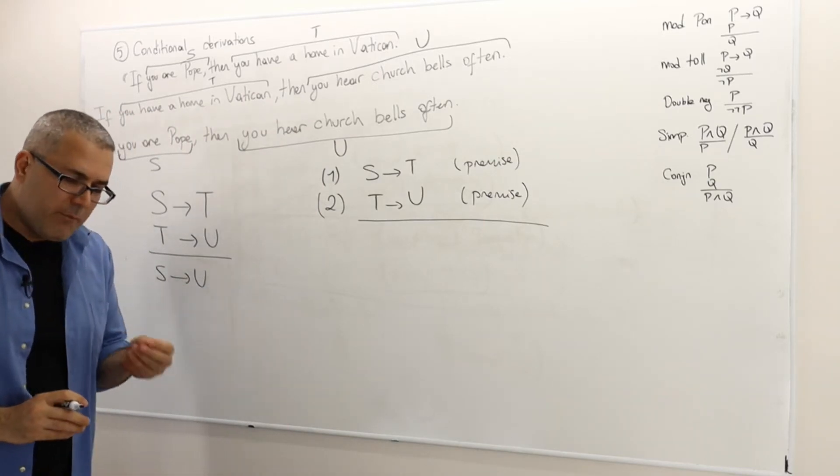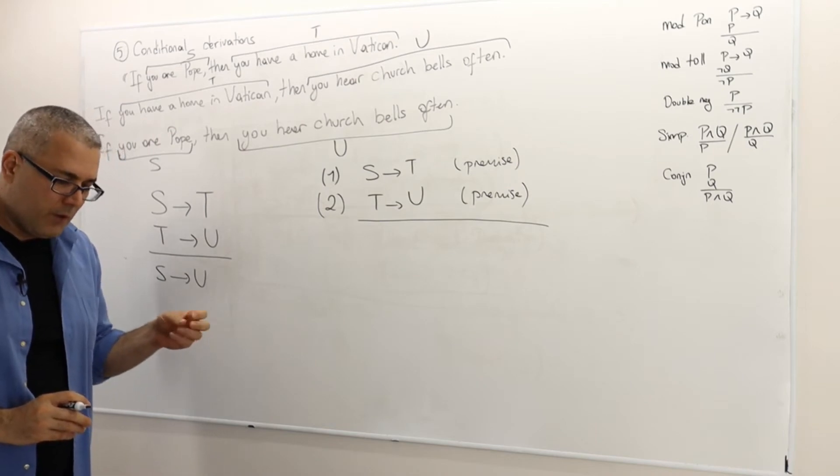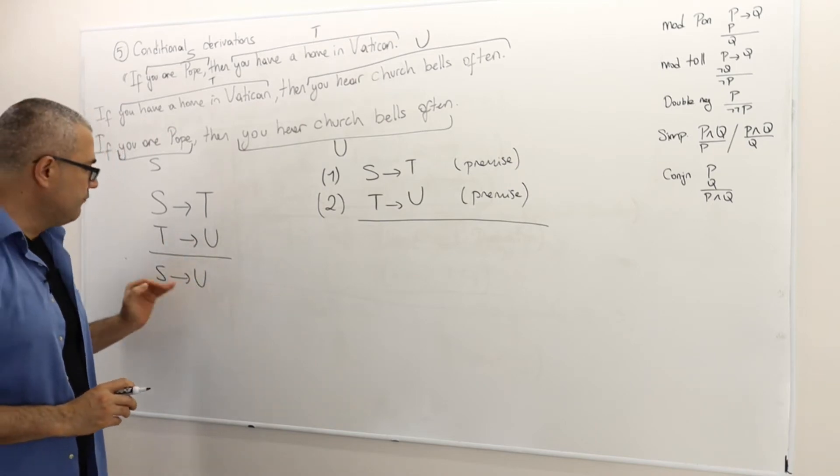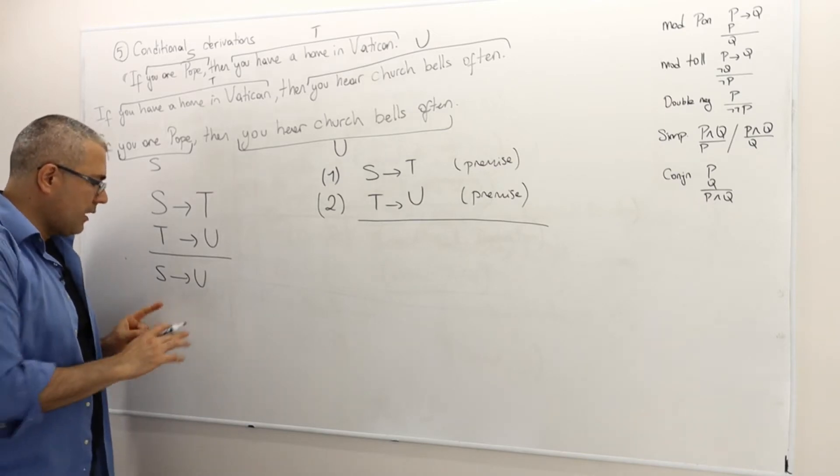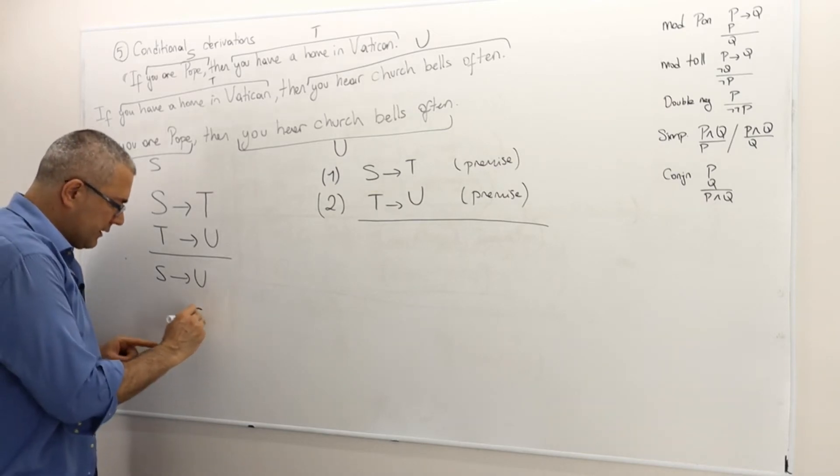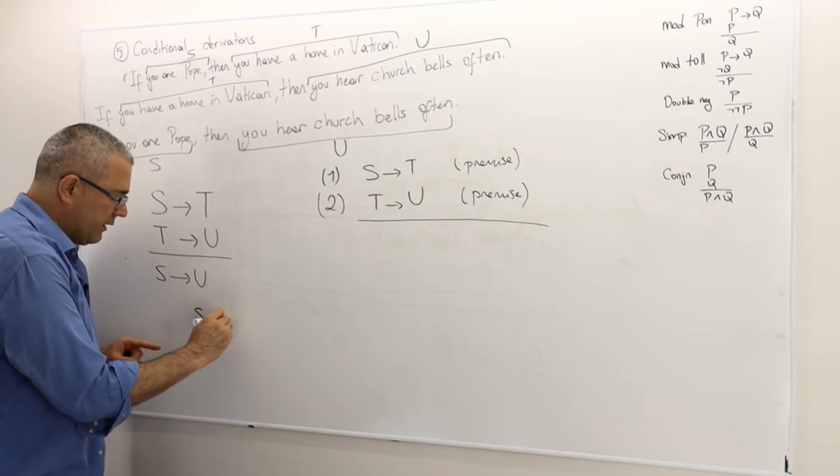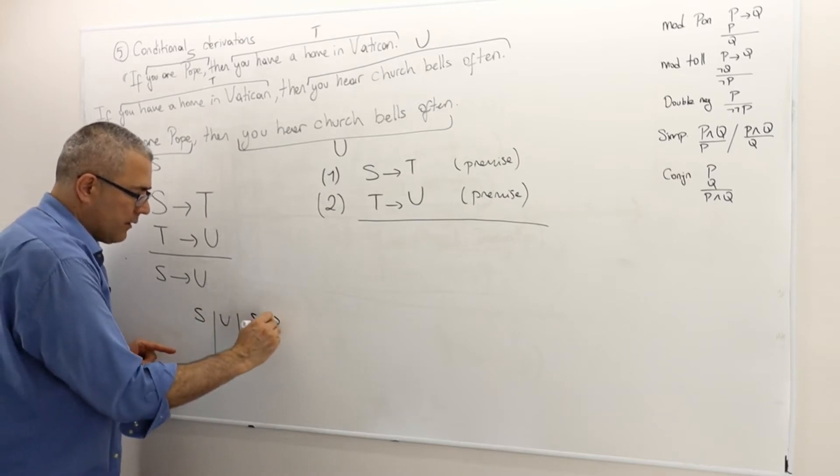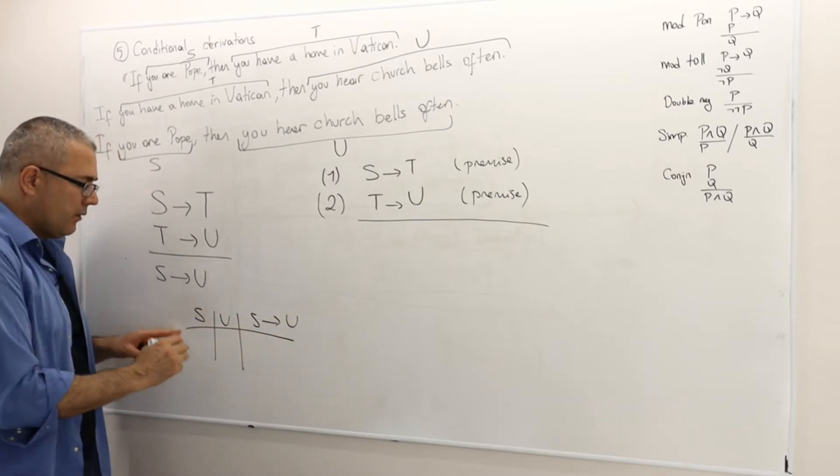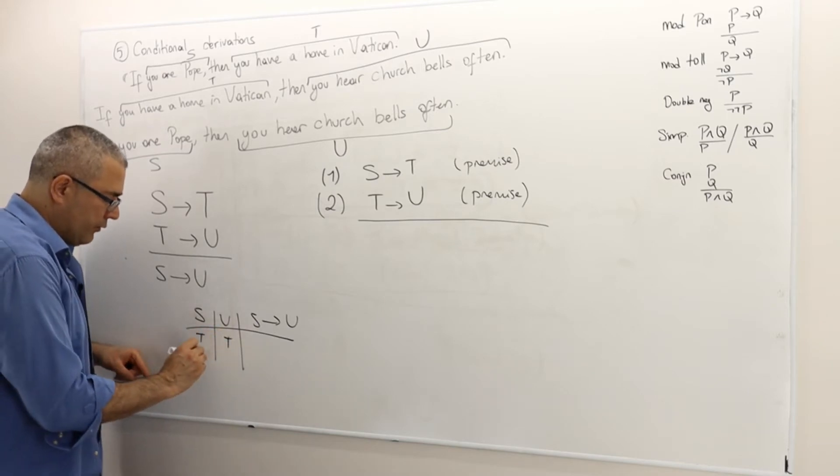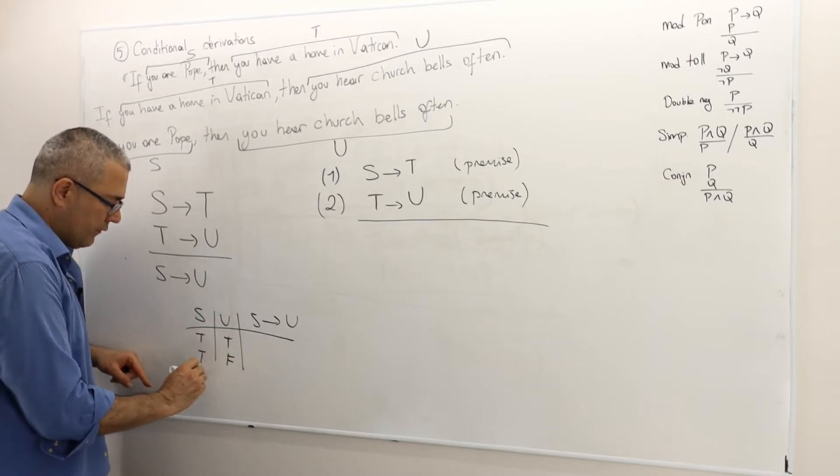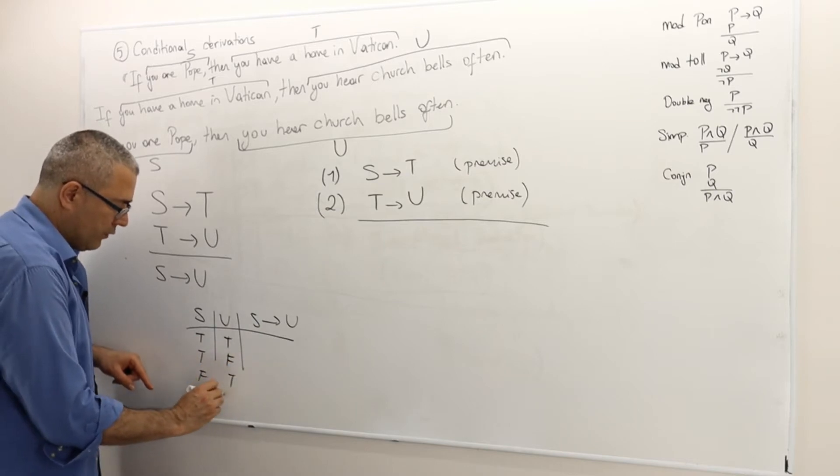Well let's remember the truth table of S implies U. If you remember the truth table, let's construct it very quickly. So S can be true or false, U can be true or false, giving us all combinations.